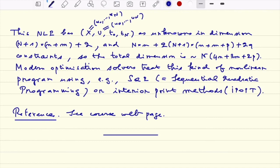And if t0 and tf are free, you have these two additional unknowns. So the dimension is quite readily N plus one times n plus m, n being the dimension of the state and m the dimension of the control, plus two. And we have a set of constraints.